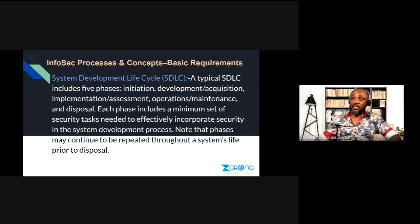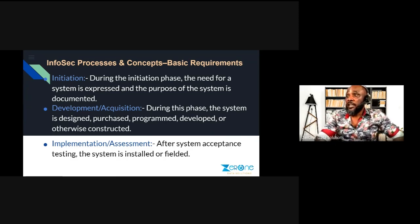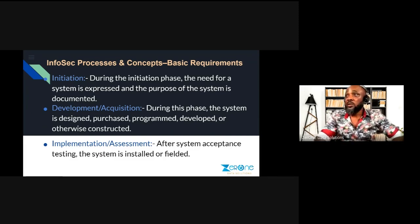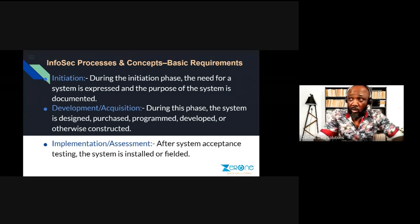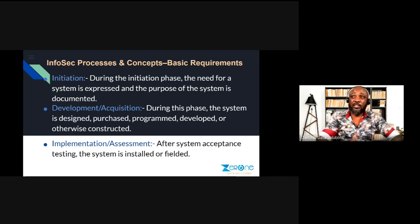A typical SDLC includes five phases: the Initiation phase, the Development and Acquisition phase, the Implementation and Assessment phase, the Operation and Maintenance phase, and the Disposal phase. In the Initiation phase you decide what to acquire. In the Development and Acquisition phase you purchase or develop the software or hardware. In the Implementation phase you install it and verify it is performing the function it's intended to do.